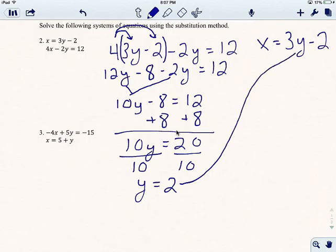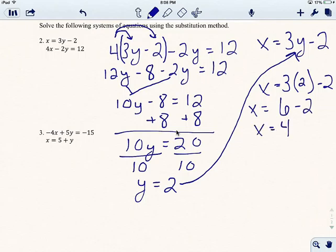But this is really easy because I'm going to rewrite this original equation. x equals 3y minus 2. And just the way that we took the original 3y minus 2 and plugged it into the other equation, wherever we had an x, I can take this y, this y equals 2, and I can plug that in anywhere else that there's a y. The same thing we did. But now with the y.